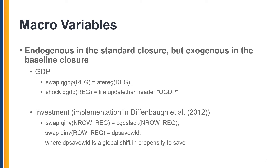To impose historical changes in regional investment, the investment variable QINF is swapped with CGDSLAC, such that investment becomes exogenous and can be shocked, and CGDSLAC becomes endogenous. However, we cannot keep this swap for all regions, so for one region we would have to keep investment endogenous.